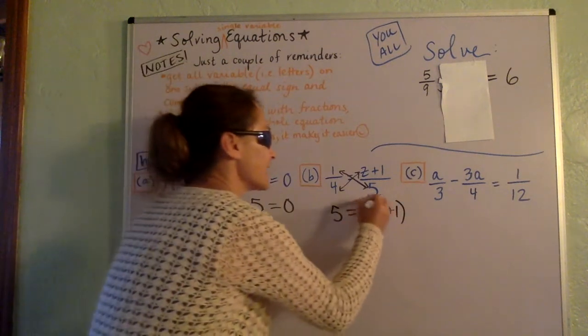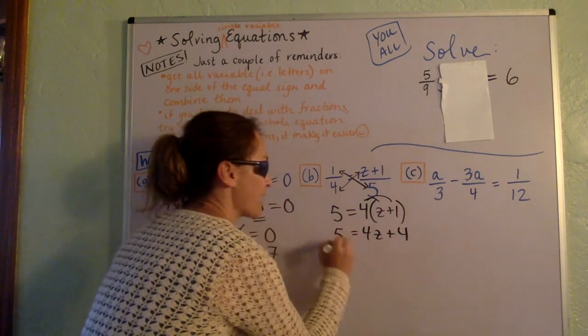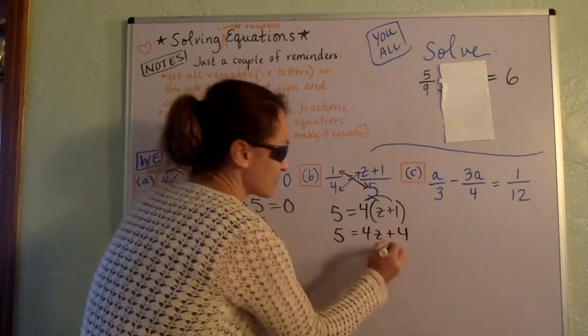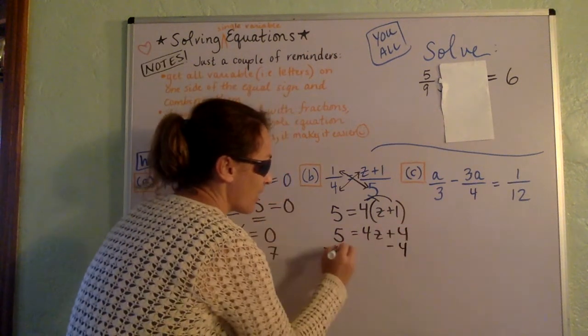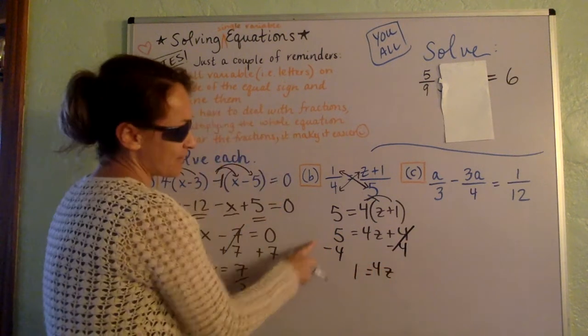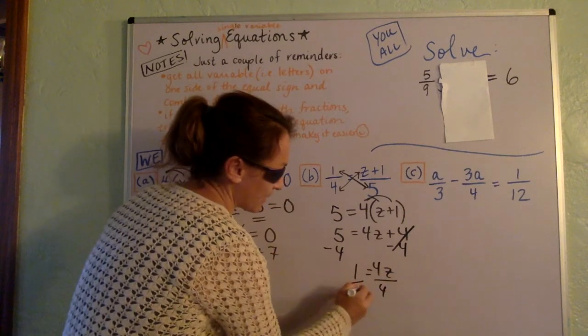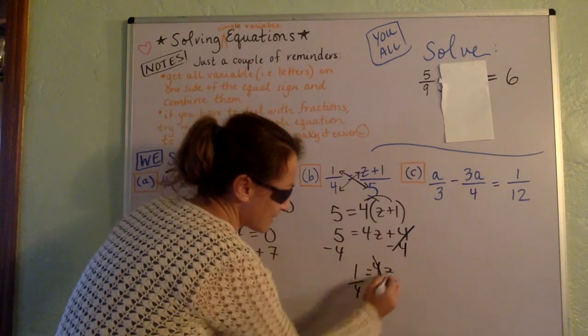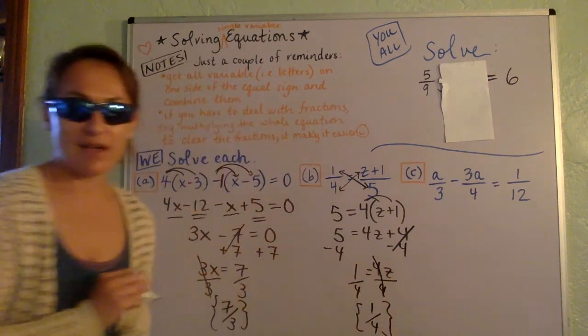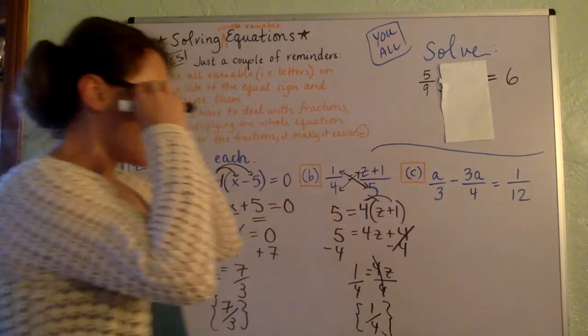And then now let's just continue. So distribute. So that's 4z plus 4 equals 5 over here. And now this is already kind of isolated. There's just one term. So I'm going to move all the terms that don't have a variable to one side. 5 minus 4 is 1. And then we just want to get the z by itself. So we'll just divide by 4. And we'll get that z equals 1 fourth. Final answer. So let's take a look at this last one over here.